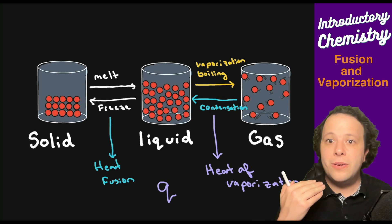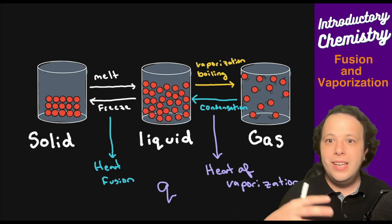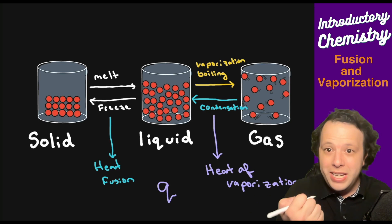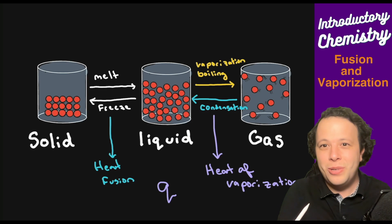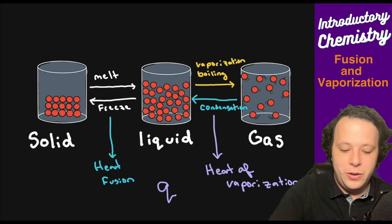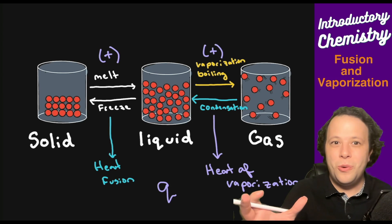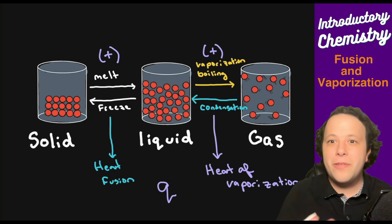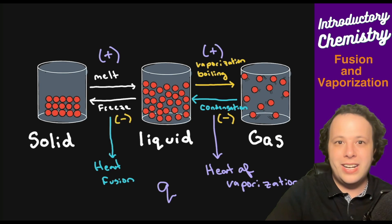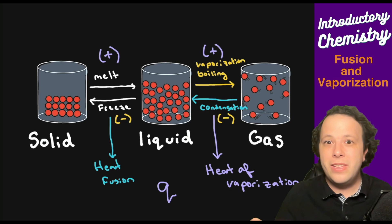We use the letter q to denote heat. There are signs behind these values because there are endothermic and exothermic processes. If you hold an ice cube, it's absorbing heat — so absorbing is a positive q value. Melting and boiling are positive q values. Freezing and condensation require the substance to release heat, so those are negative q values. Whether you go one way or the other determines the sign in your calculation.